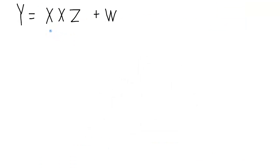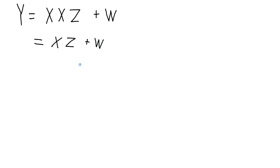In this problem, we'll note that we have an x ANDed with an x. Any time that you have a literal ANDed with itself, it's just the literal — so x ANDed with x is simply x. We then have x ANDed with z, and then ORed with w, and that's as simple as we can get this one.